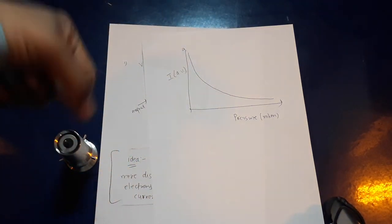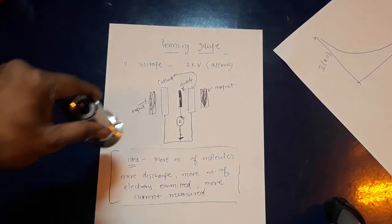That's how the curve looks like, current versus pressure. Now let's see what is inside.